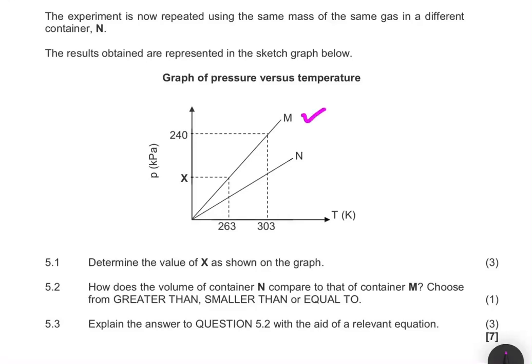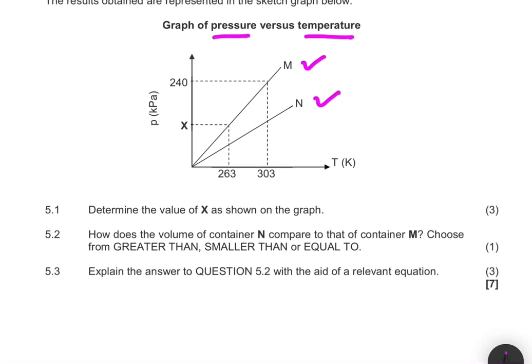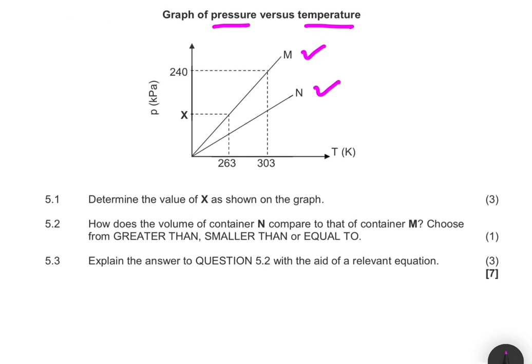We have two containers M and N. They have the same gas of the same mass, and we're given the pressure versus temperature for the two containers. The first question, 5.1, asks us to calculate the value of X on the graph.